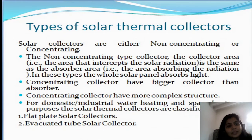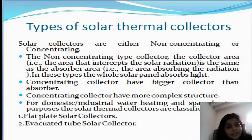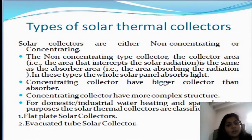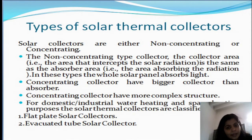Solar collectors are basically two types: non-concentrating and concentrating. In the non-concentrating type of solar collector, the collector area — that is the area that intercepts the solar radiation — is the same as the absorber area. Because collector area is same as absorber area, in this type the whole solar panel absorbs the light.